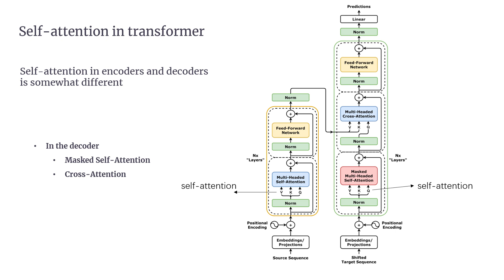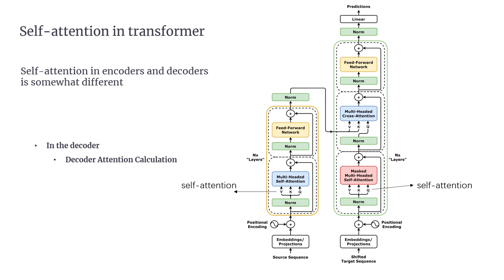For decoder input, similar to the encoder, the decoder starts with token embeddings and positional encodings. However, the decoder begins with an initial start token and generates output in an auto-regressive manner, one token at a time, based on previous tokens. In masked self-attention, the decoder's queries can only attend to tokens already predicted, ensuring predictions are based only on known data. In cross-attention, the decoder's queries come from the previous layer's output while keys and values come from the encoder's output. After processing through both attention types, the final predictions pass through a linear layer followed by softmax to get probabilities for the next token.